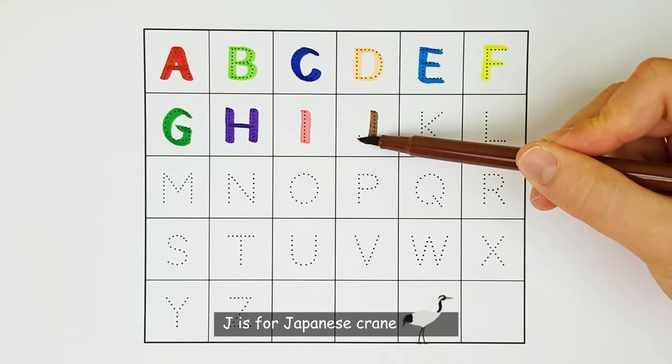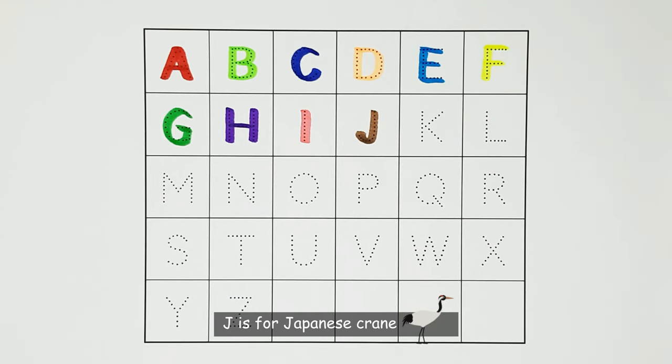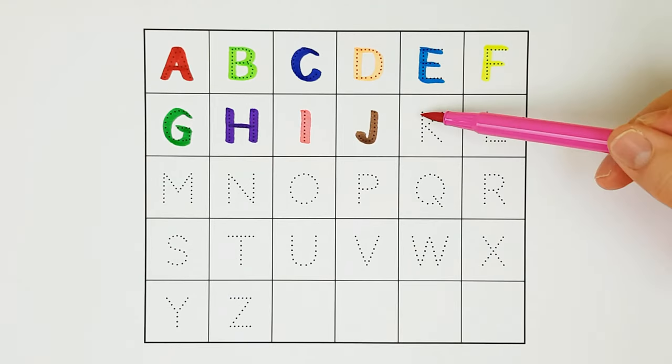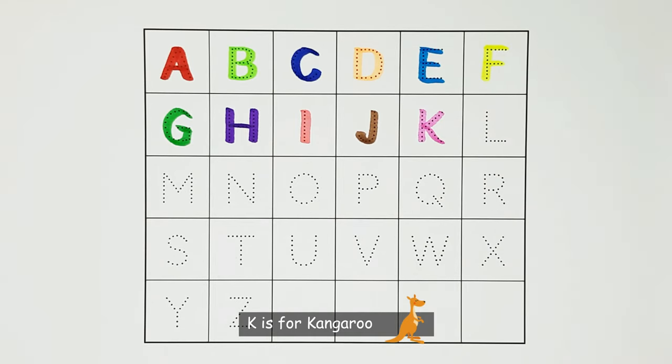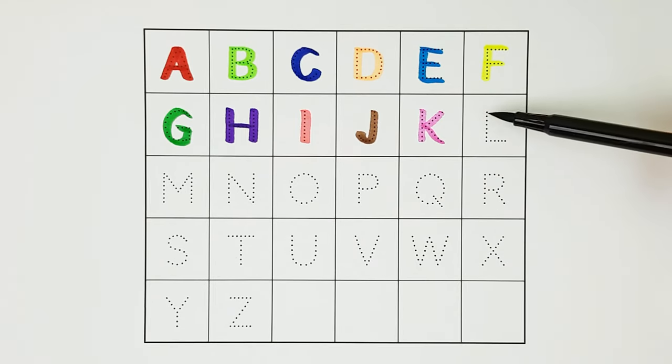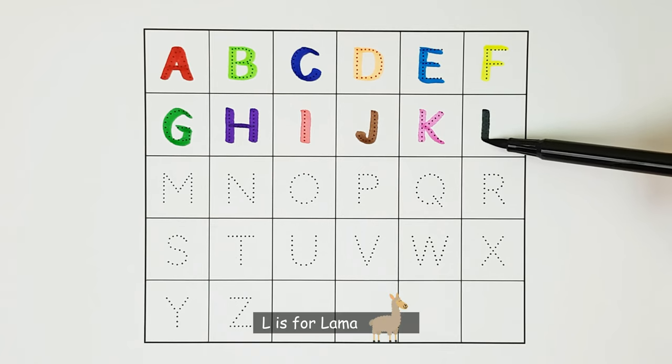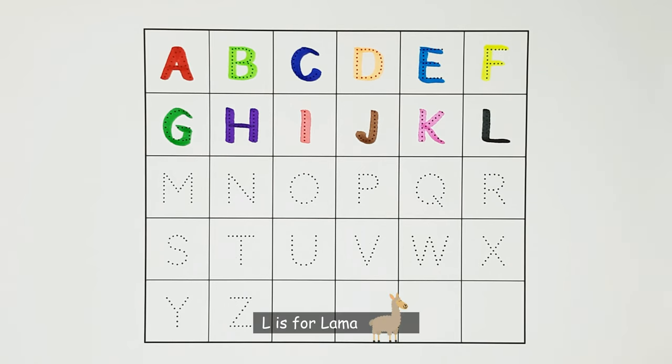J. J is for Japanese Crane. J. K. K is for Kangaroo. K. L. L is for Llama. L.